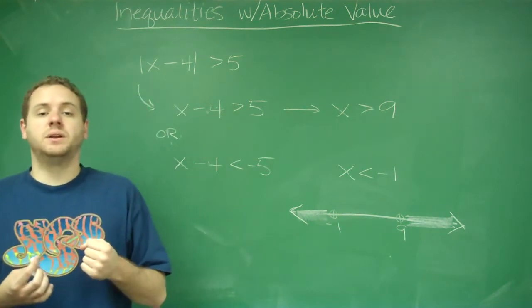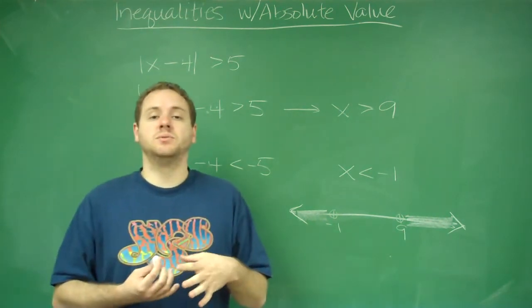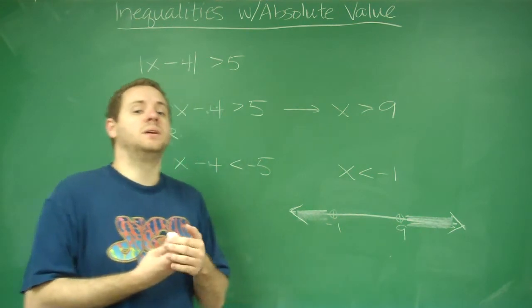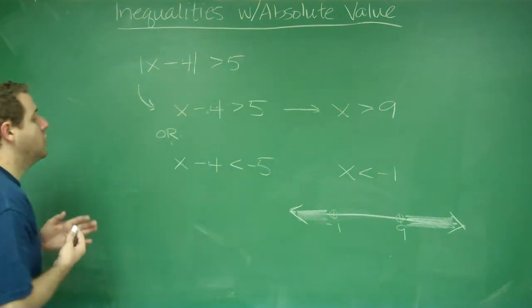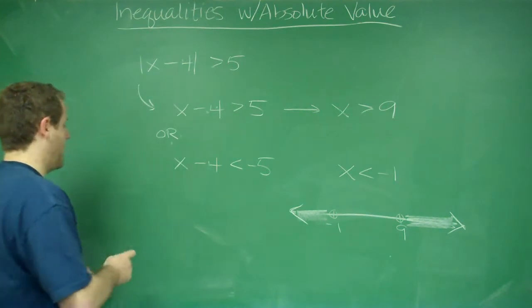So whenever you have an absolute value inequality, you always want to break it into its two cases. Now keep in mind, there are going to be tricky things too, where you actually don't even need to do any work. Let's look at an example of that.